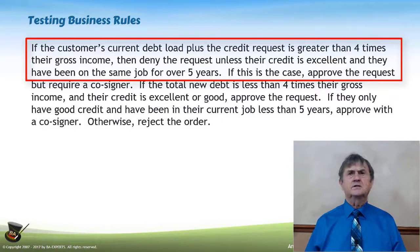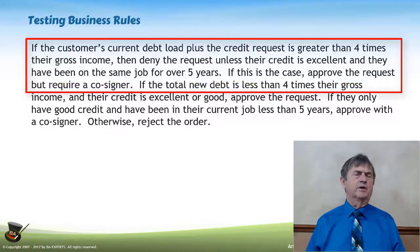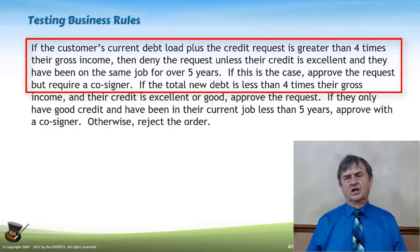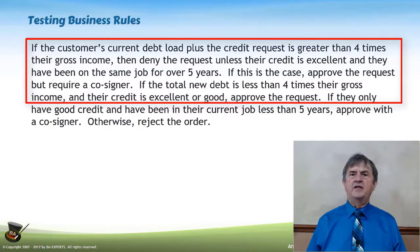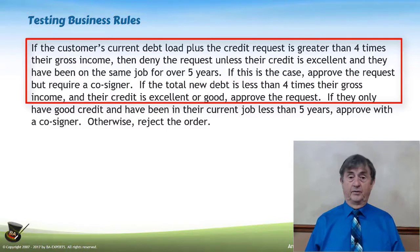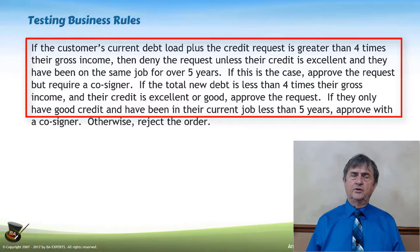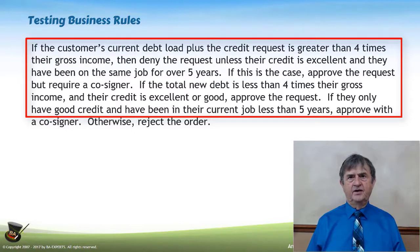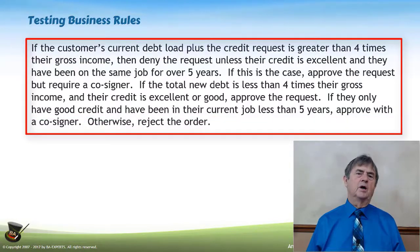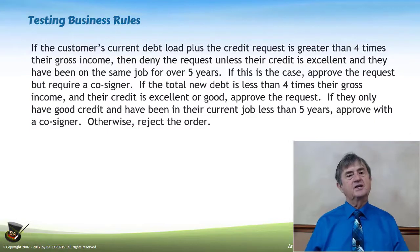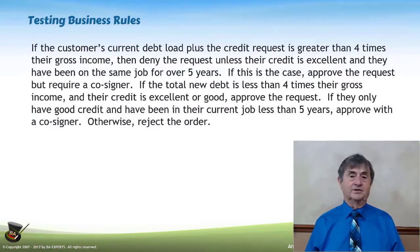If this is the case, approve the request but require a cosigner. If the total new debt is less than four times their gross income and their credit is excellent or good, approve the request. If they only have good credit and have been on their current job less than five years, approve with a cosigner. Otherwise, reject the order. That's basically the kinds of things we deal with when talking about business rules.